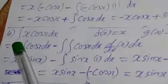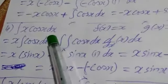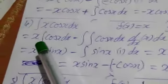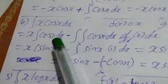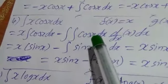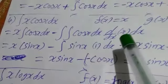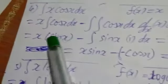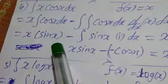Next is the fourth problem: integration of x cos x. Again, first term is x and second term is cos x. Applying the formula: first term as it is, integration of second term — integration of cos x is sin x — minus double integration of second term into d by dx of first term dx. So x as it is, integration of cos x is sin x.